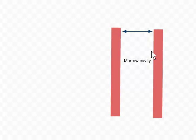Here what I've done is I've taken the shaft of a long bone and I've sectioned it down along its long axis longitudinally so that we can see the wall of bone here and the wall of bone here with the marrow cavity in between.